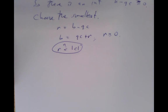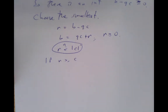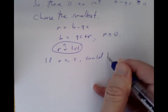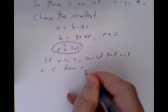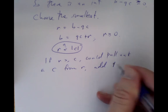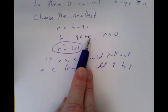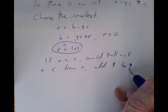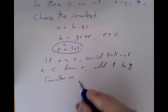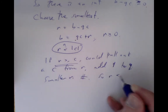We still need to show that r is less than the absolute value of c. What happens if that doesn't hold? If r is bigger than or equal to c — and we've arranged c is positive — we could pull a copy of c out of r and add 1 to q, and we'd still get the same equation satisfied, making a smaller r. But that's a contradiction because we assumed r was the smallest. So r must be less than c.